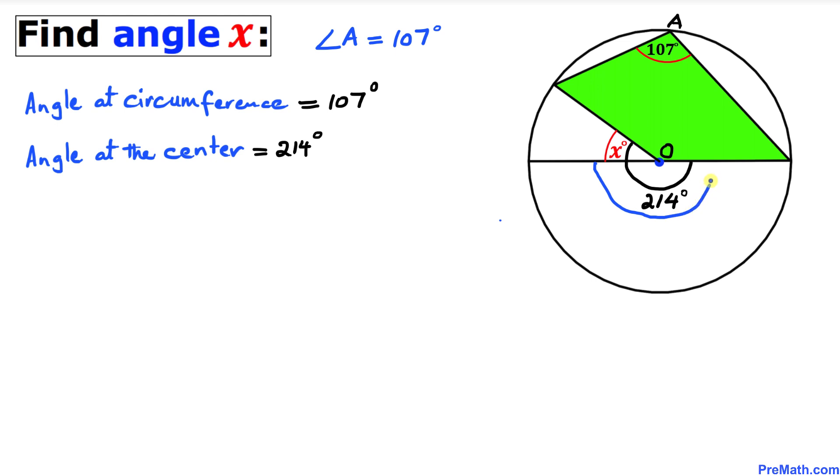Therefore, angle x is simply: x = 214 degrees minus 180 degrees. Let's go ahead and subtract.